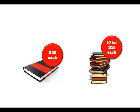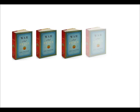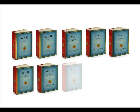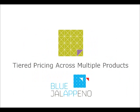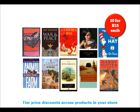So you want to offer a bulk buy discount in your Magento store. You can use tiered pricing on your products — let's say buy 10 books for $15 each. The problem is you have to buy 10 of the same book to get the discount. With tiered pricing across multiple products from Blue Jalapeno, you can offer that same bulk buy discount across any books in your store.